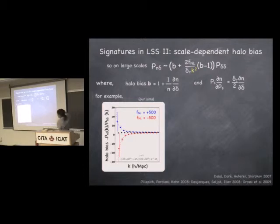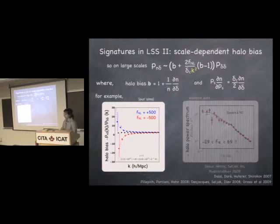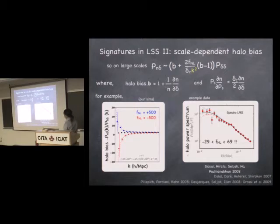Given this relationship, the halo-matter cross-power spectrum on large scales is proportional to the matter power spectrum with the usual bias factor, plus this additional f_NL-dependent term with this 1/k² scale dependence. This relationship can be written down analytically, but we still need simulations to accurately predict the derivative terms and bias parameters. Here's an example from our simulations — the ratio of the halo-matter power spectrum to the matter power spectrum, which is just the halo bias. The black points are with Gaussian initial conditions, and for positive or negative f_NL you see this dramatic 1/k² upturn on very large scales, matching the prediction.